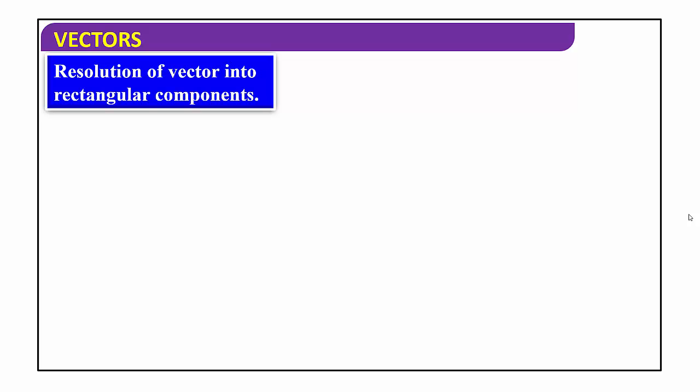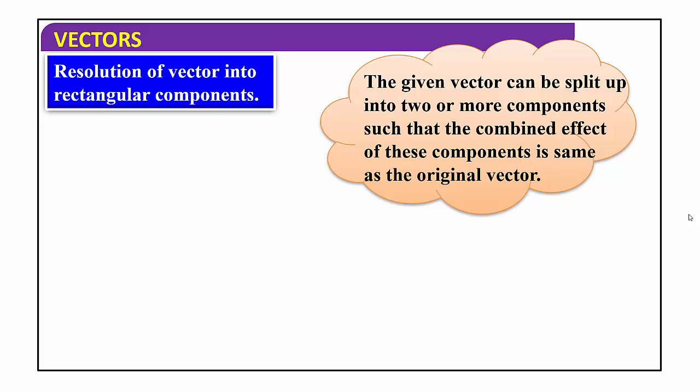Resolution of a vector into rectangular components. First we have to know what is resolution of vector. Resolution means resolving, dividing, or separating. When a given vector is split into two components or more than two components, then we call it the resolution of a vector. The splitting up of a vector into two or more components is called resolution of a vector.